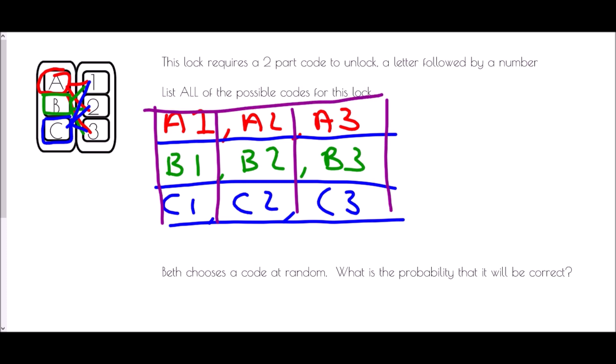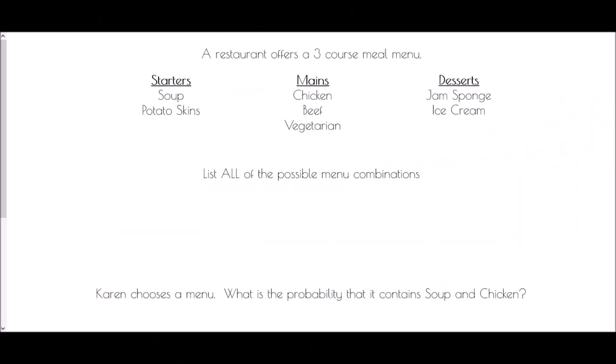That is helpful when it comes to the second part of the question, which is about probability: Beth chooses a code at random — what is the probability that it will be correct? Only one of them can possibly be the correct code, so she has a one out of nine chance of selecting the correct code.